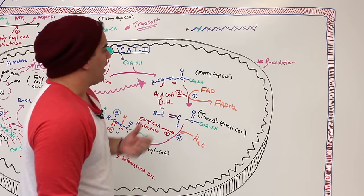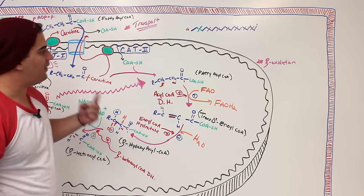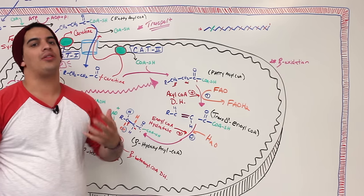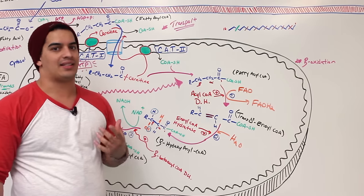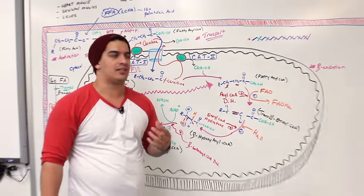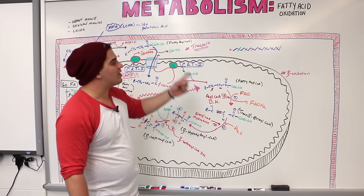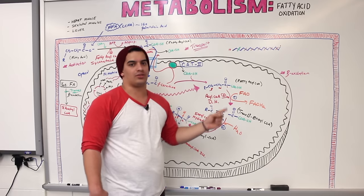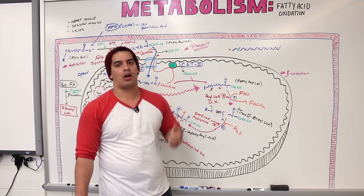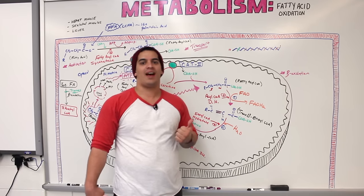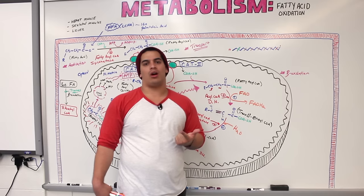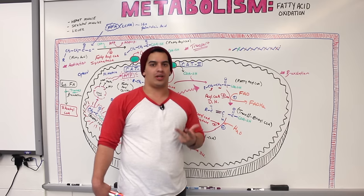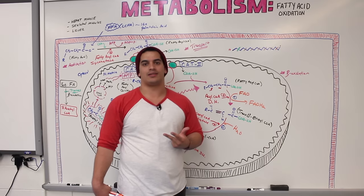In the next video we're going to talk about the energy yield, odd-chain fatty acids, and beta oxidation that can occur in peroxisomes.